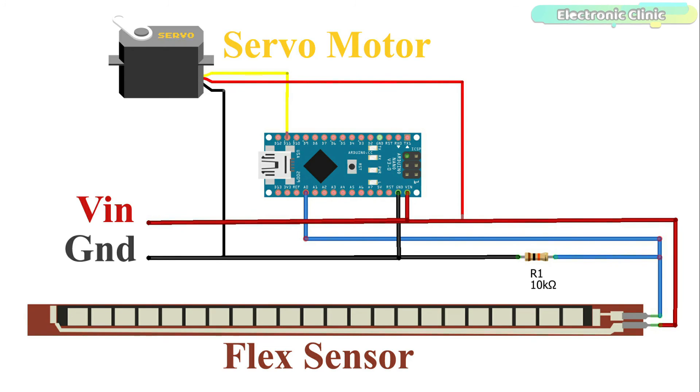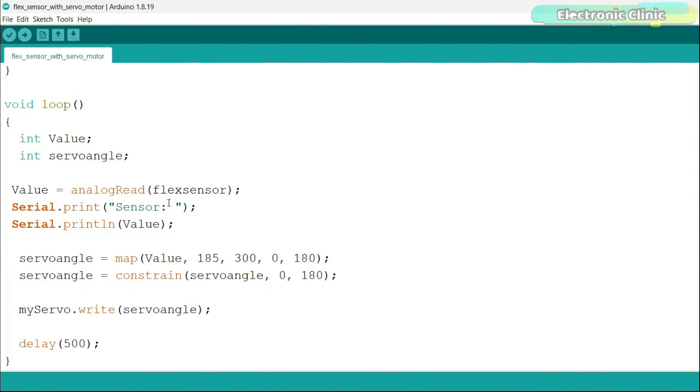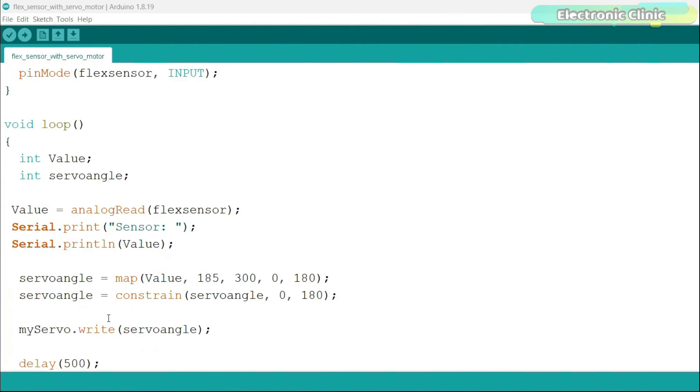Now let's go ahead and take a look at the programming. Again, I modified the previous code. This time you can see I have also added a library for the servo, and the servo is connected to the Arduino pin 11. In the loop function, I map the values to control the servo motor angle between 0 and 180 degrees. I have already uploaded this program, and now let's watch the flex sensor and servo in action.